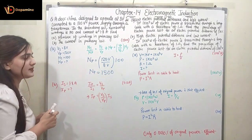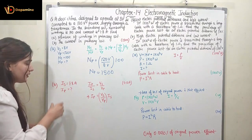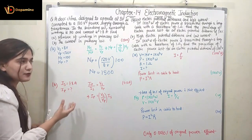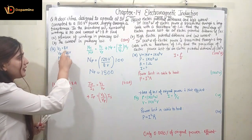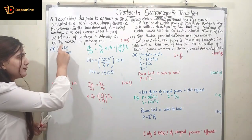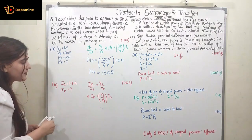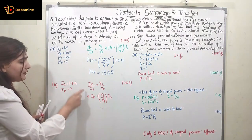The number of turns in the secondary is 100, which means it's a step-down transformer. The voltage decreases — and that is what is happening: from 120 volts it decreased to 8 volts. Now coming to the second part.